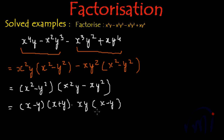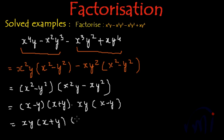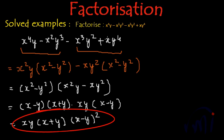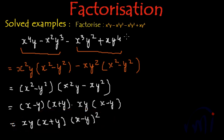Since we have two x minus y factors, I am going to write the result as: first xy, then x plus y, and after this x minus y whole square. So these are the factors of x to the power 4y minus x squared y cubed minus x cubed y squared plus xy to the power 4.